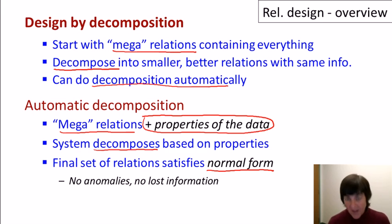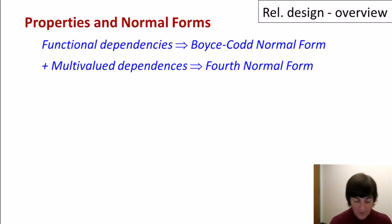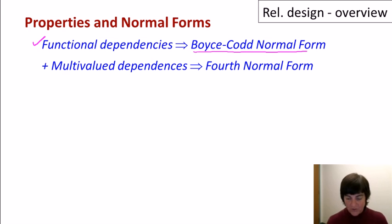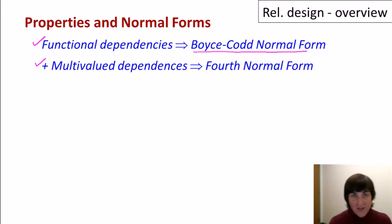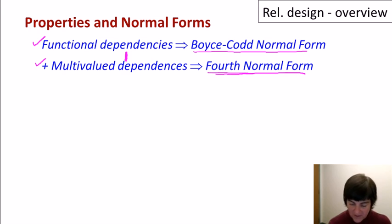Normal forms don't have any of those anomalies and don't lose any information. For specification of properties, we'll begin by looking at functional dependencies. Once we specify functional dependencies, the system will generate relations in what's called Boyce-Codd Normal Form (BCNF) — named after two early pioneers in relational databases. Then we'll look at another type of specification called multi-valued dependencies, which adds to functional dependencies. When we have both functional and multi-valued dependencies, we can achieve fourth normal form (4NF).